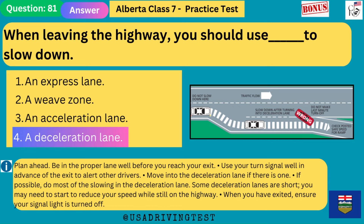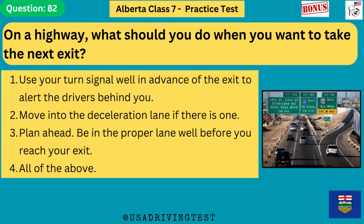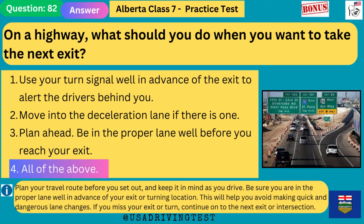On a highway, what should you do when you want to take the next exit? 1. Use your turn signal well in advance of the exit to alert the drivers behind you. 2. Move into the deceleration lane if there is one. 3. Plan ahead — be in the proper lane well before you reach your exit. 4. All of the above. The answer is 4: all of the above. Plan your travel route before you set out. Be sure you're in the proper lane well in advance of your exit. If you miss your exit or turn, continue on to the next exit or intersection.